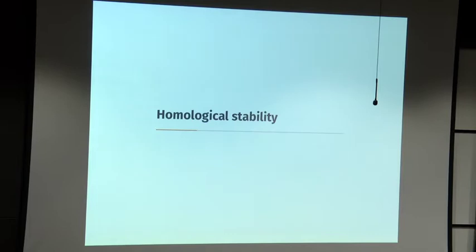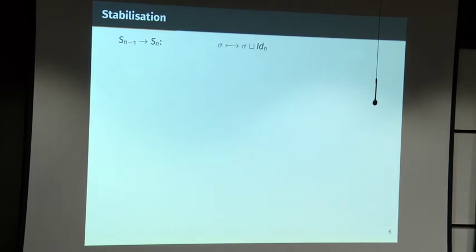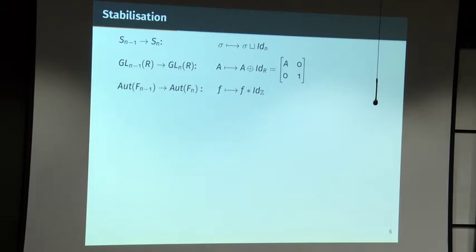I want to explain three tools for proving things about moduli spaces of manifolds. The first is homological stability. Almost all of my moduli spaces had some parameter n or genus, and these moduli spaces of a given type have maps between them. If I have a permutation of n−1 points I can get a permutation of n points by fixing the new point. If I have an automorphism of a free module of rank n−1, I get one of rank n by the trivial automorphism on the new factor.